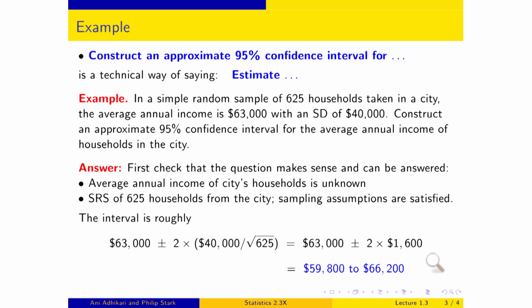So what am I asked to do? Estimate the unknown average income of households in the city. If you had to give me one number as your estimate, you would say $63,000. For 95% confidence, you go two standard errors on either side: 63,000 plus or minus two standard errors for the sample average, which is σ divided by root sample size. I don't have the population SD so I'll put in the sample SD, giving 63,000 plus or minus two lots of $1,600. That $1,600 is the SE for the sample average — it shows roughly how far off this sample average is from the unknown population average. So the interval is $59,800 to $66,200. If I wanted 68% confidence, I'd walk one standard error instead of two, giving $63,000 plus or minus $1,600.